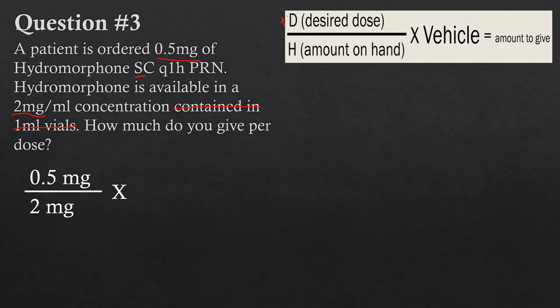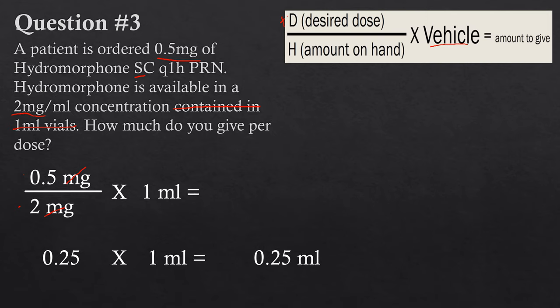The amount on hand is 2 milligrams — that goes at the bottom. The vehicle: in the last two questions it was tablets, but now it's 2 milligrams per every milliliter, so the vehicle is one mL. Now we solve: 0.5 divided by 2 gives 0.25, milligrams cancel out, and we multiply by one mL. The answer is 0.25 milliliters.